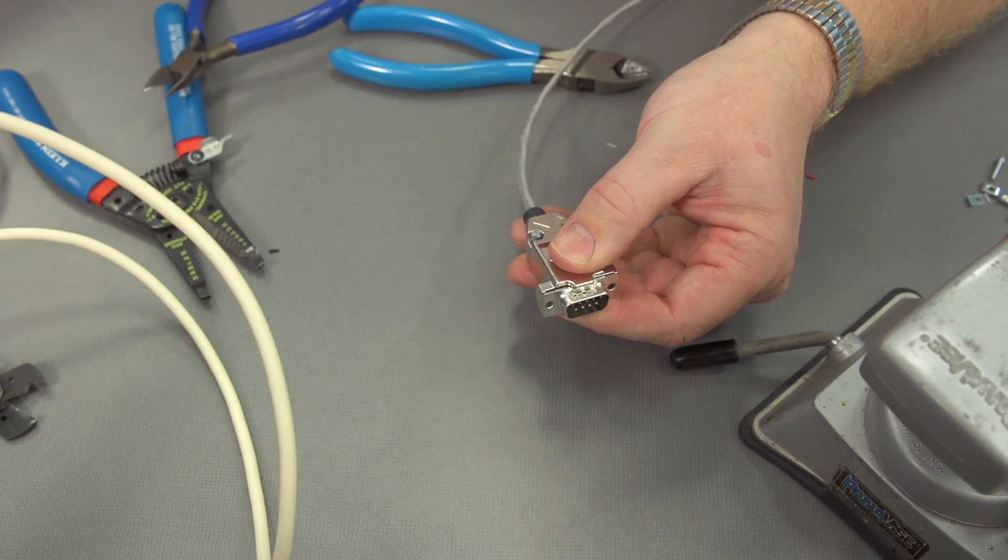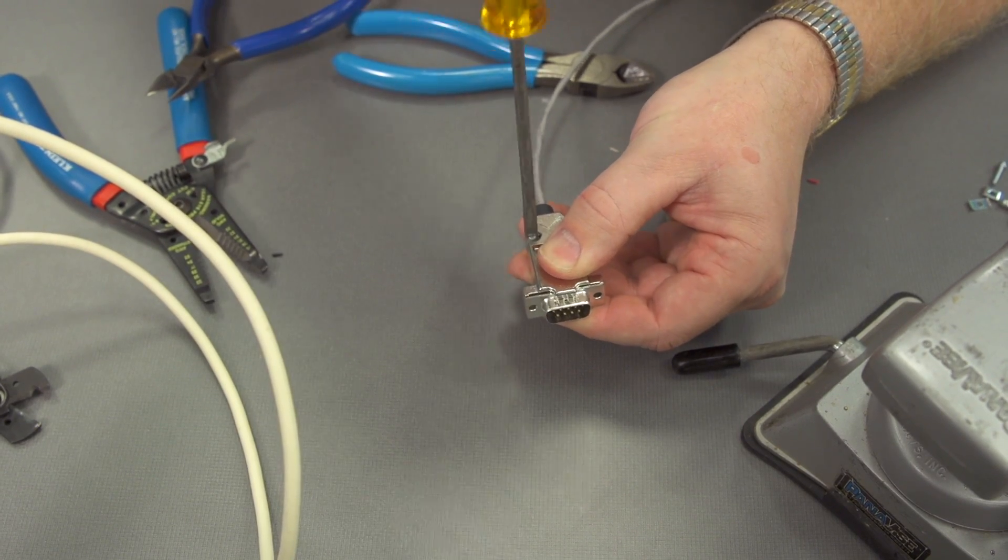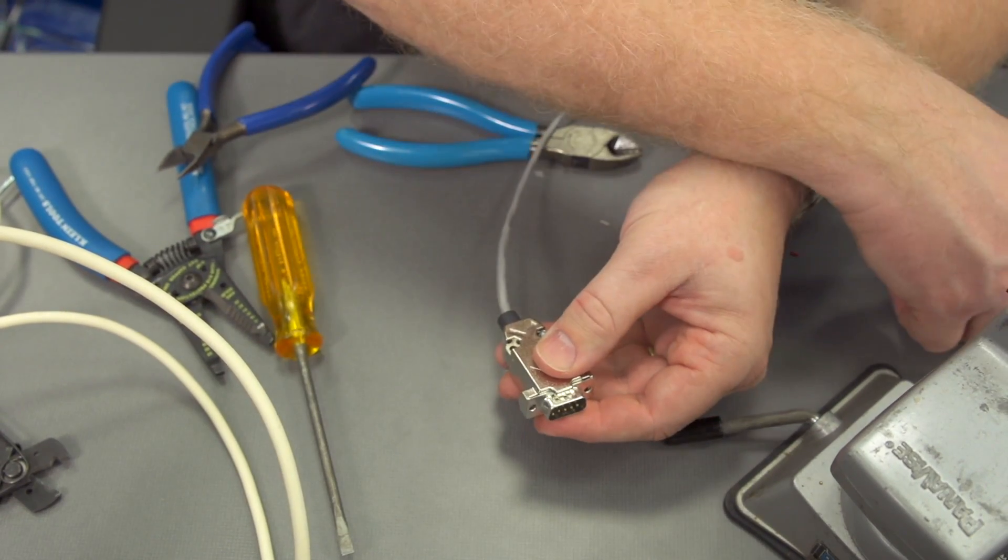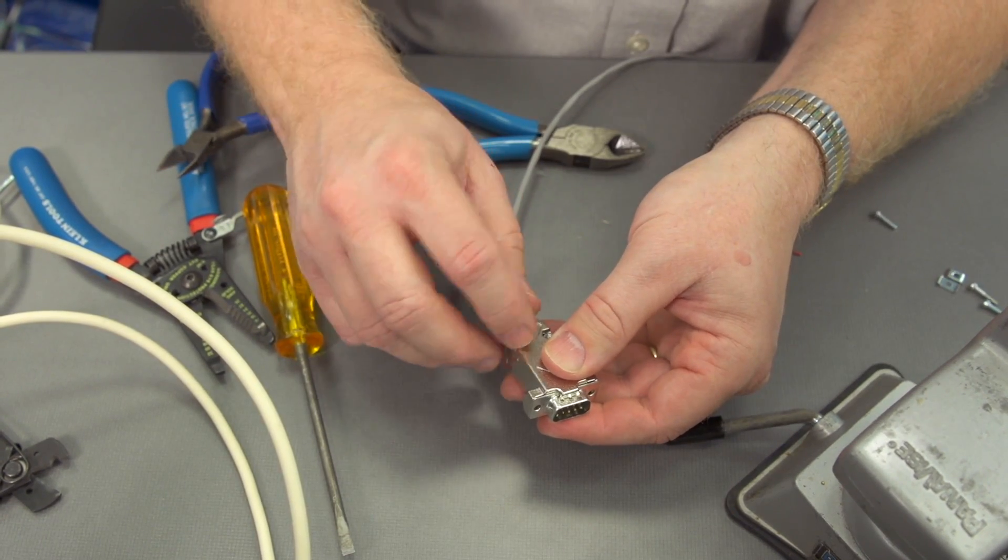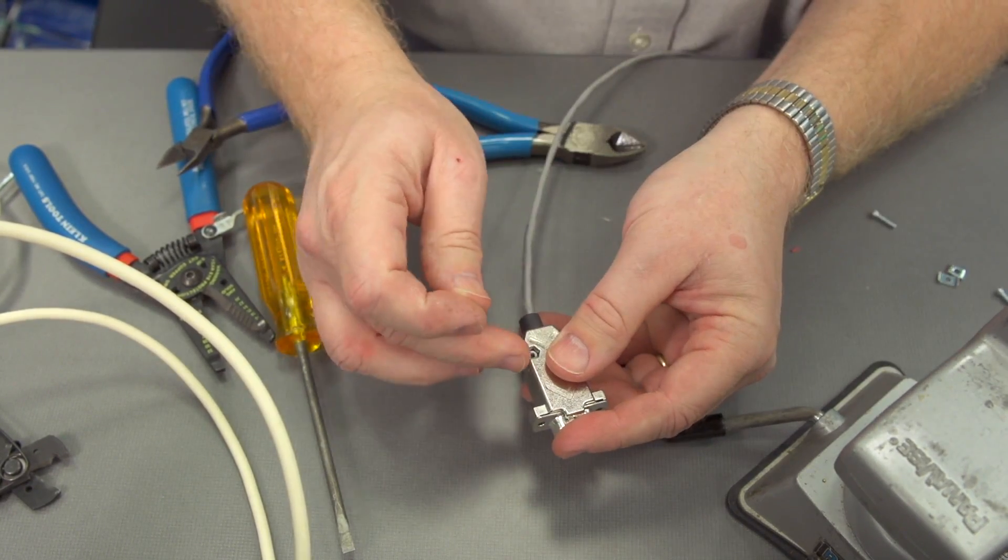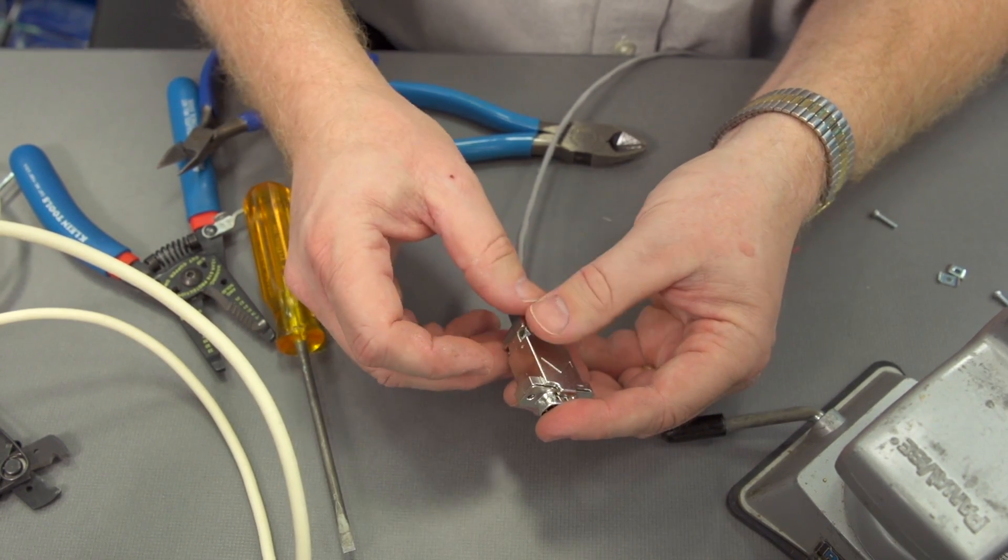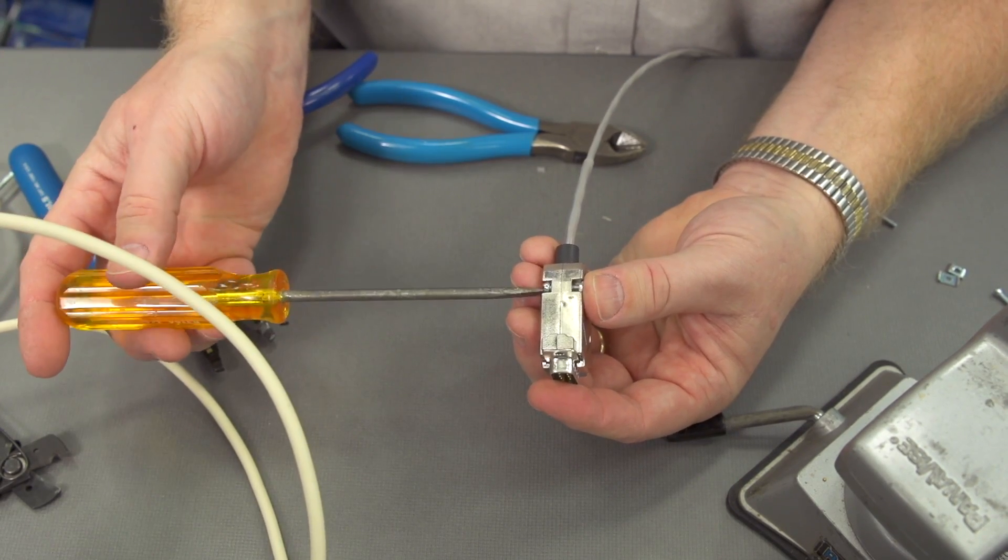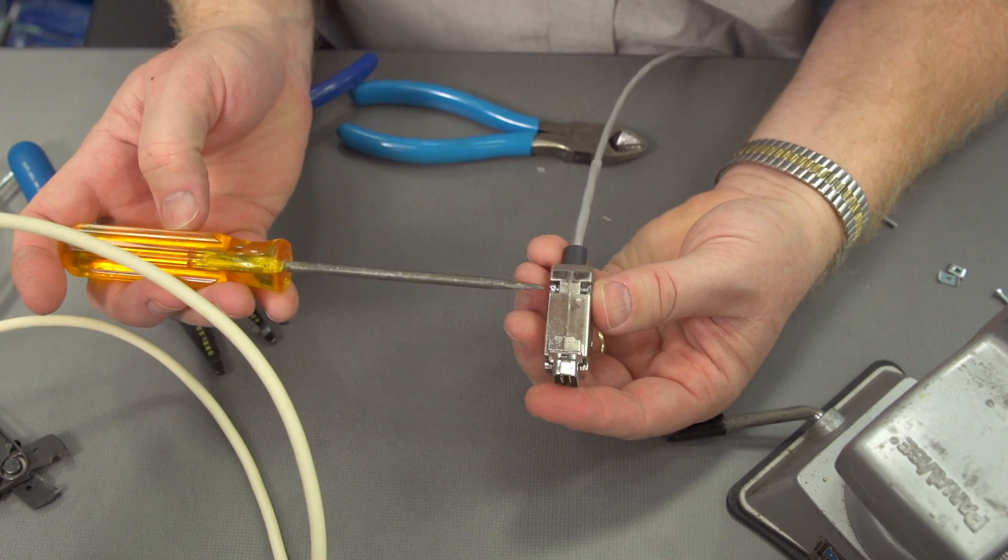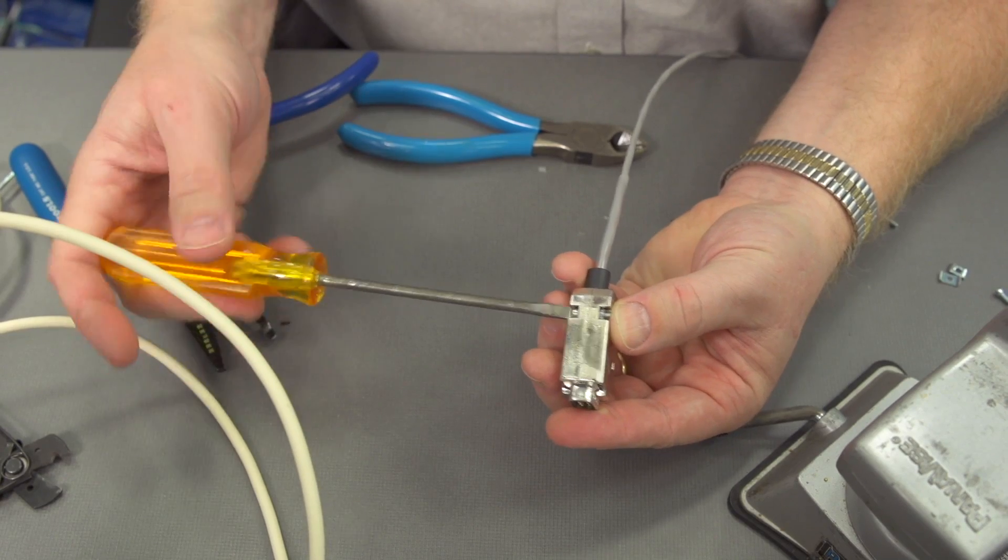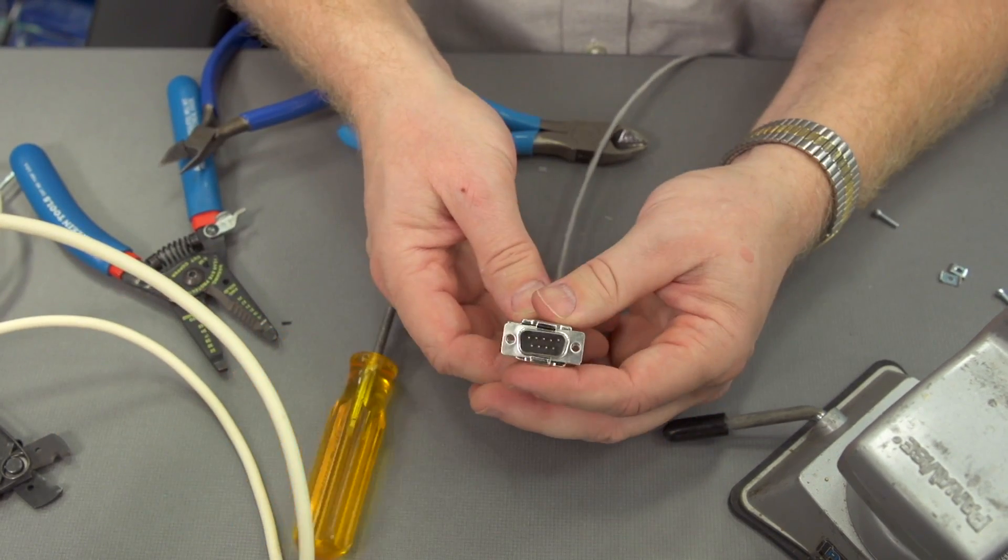We can put in one of the machine screws. That's one side. The way the nut fits in there it actually keeps it from turning as we finish this up. And that's our DB9 male. Now we'll move on to the DB9 female.